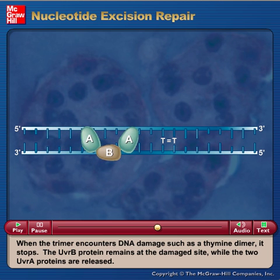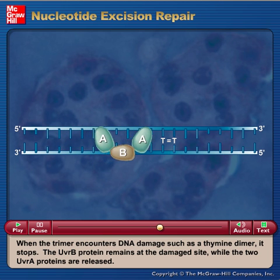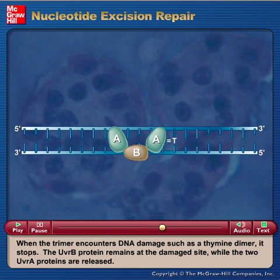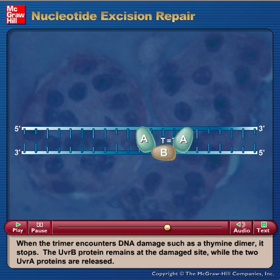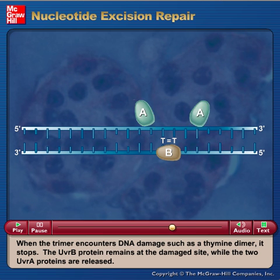When the trimer encounters DNA damage such as a thymine dimer, it stops. The UVRB protein remains at the damaged site while the two UVRA proteins are released.